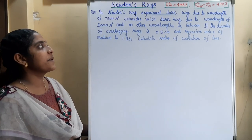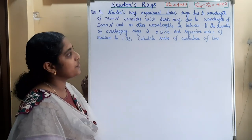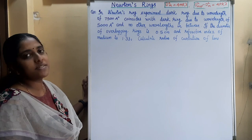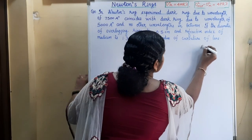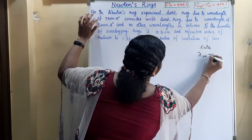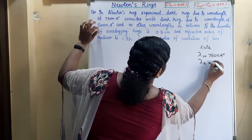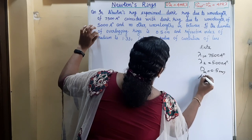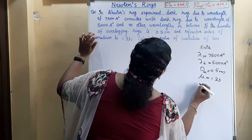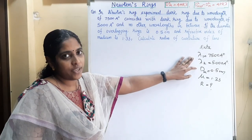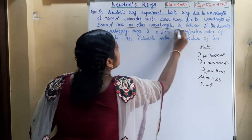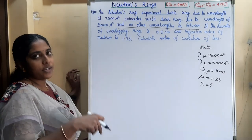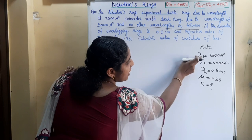Last question. In a Newton's ring experiment, the dark ring due to wavelength 7500 Angstrom coincides with the dark ring due to wavelength 5000 Angstrom, and no other wavelength in between. The diameter of the overlapping ring is 0.5 cm and the refractive index of the medium is 1.33. Calculate the radius of curvature of the lens. Higher wavelength 7500 Angstrom corresponds to order m, and 5000 Angstrom corresponds to order m+1.